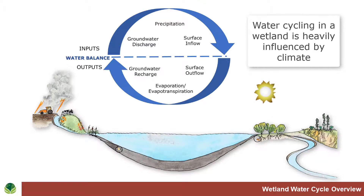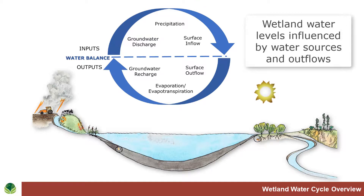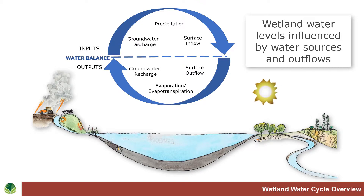it is lost through evaporation and evapotranspiration. So there are several water sources and outflows from a wetland, which ultimately affect the water levels and the water outflows from the wetland into streams and into groundwater systems.